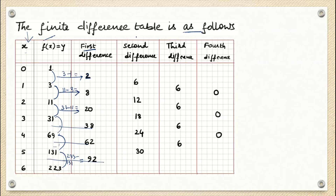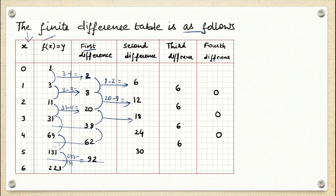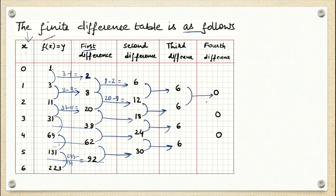Next we find the second differences, which are differences between the first differences: 8 - 2 = 6, written between 8 and 2; 20 - 8 = 12; and so on. We continue finding the third difference column the same way. The fourth difference turns out to be 0, so we stop there.